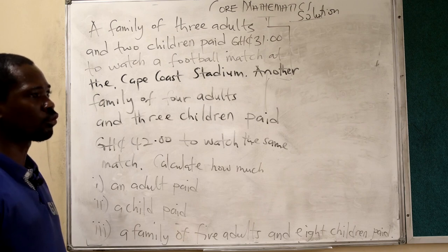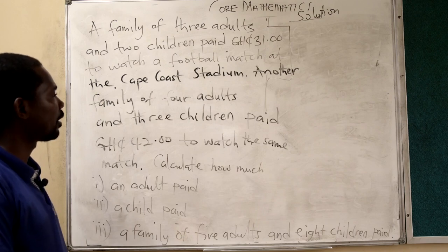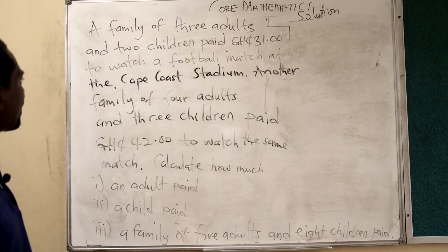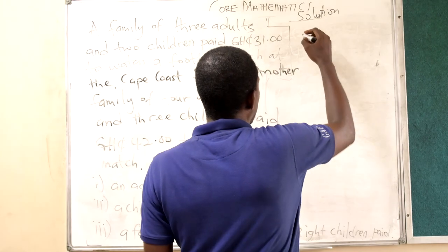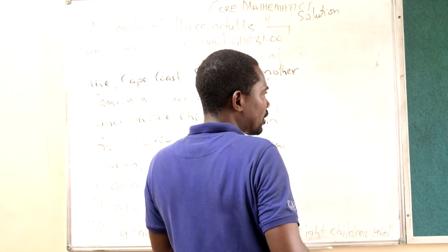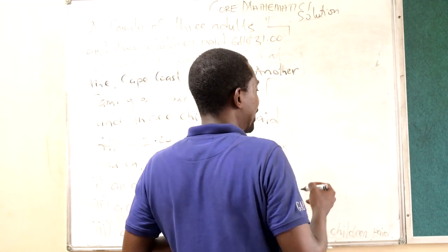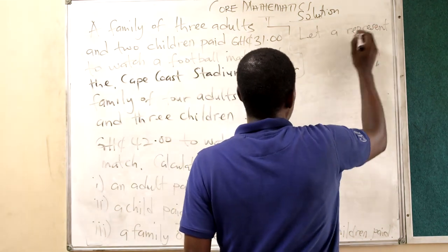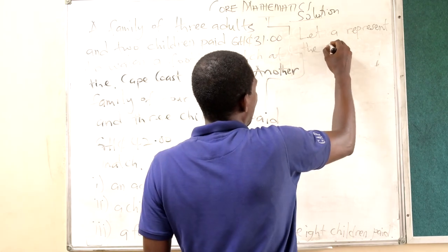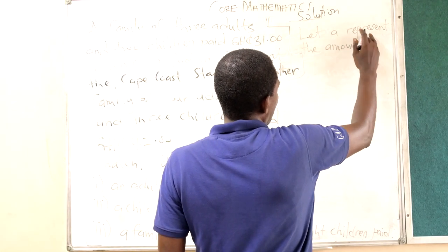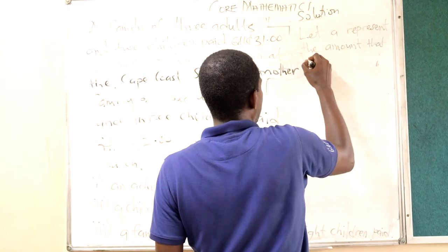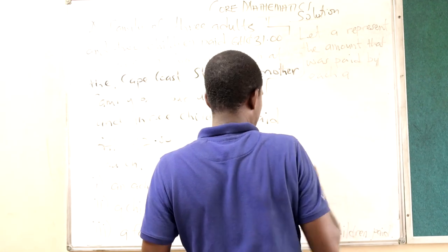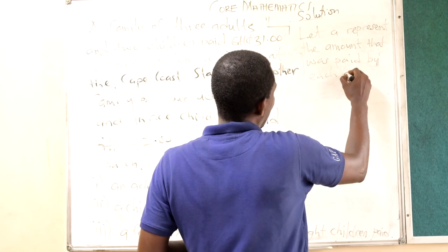Now from this question, we are going to have two equations. We take the first one from the first family and the second from the second family. The first family, there were three adults and two children. So I can use letters to represent what they paid. Let us represent the amount that was paid by each adult.